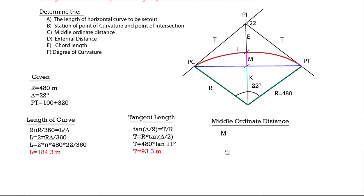Cos of delta over 2 is equal to K over R. Therefore, K is equal to R times cos of delta over 2.